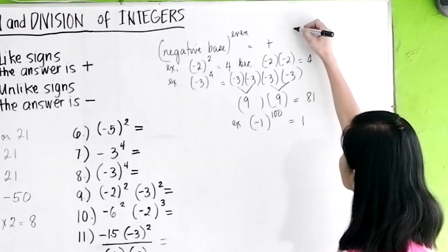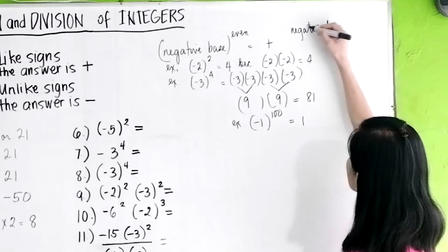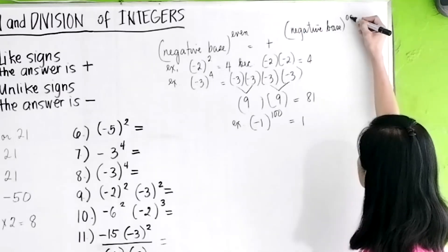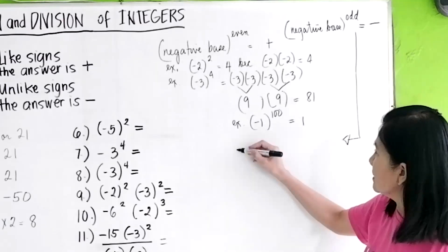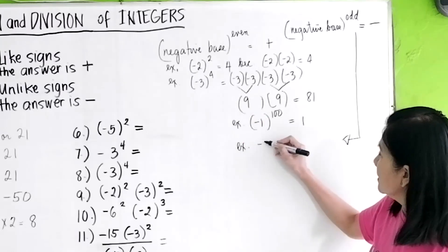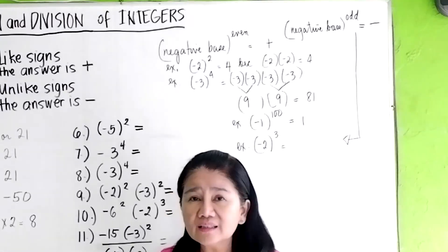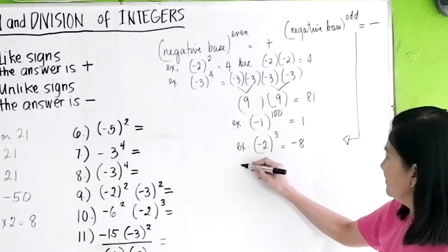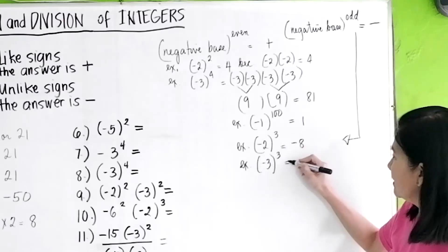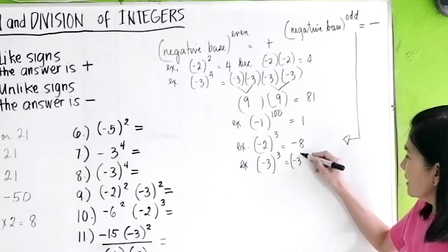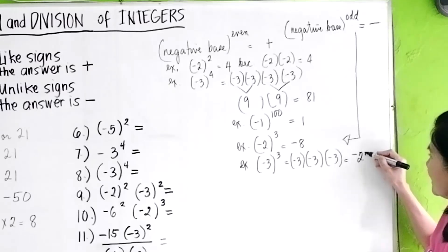When the base is negative and the exponent is an odd number, then your answer will be negative. For example, negative 2 raised to the 3rd power gives negative 8. Another example: negative 3 raised to the 3rd power — odd exponent. Negative 3 times negative 3 is positive 9. Positive 9 times negative 3 is negative 27.